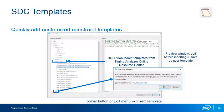Instead of manually creating SDC constraints one by one, you can use SDC templates to quickly create a complete .sdc file. Clicking the Insert Template toolbar button or selecting it from the Edit menu opens a dialog box with categories of templates. Expanding the TimeQuest category displays available templates for everything from individual constraints to complete .sdc files for typical designs. To use a template, select it from the list; it appears in the preview window where it can be edited. Click Insert to insert it at the cursor location, or click Save to save it as a user template for future use.